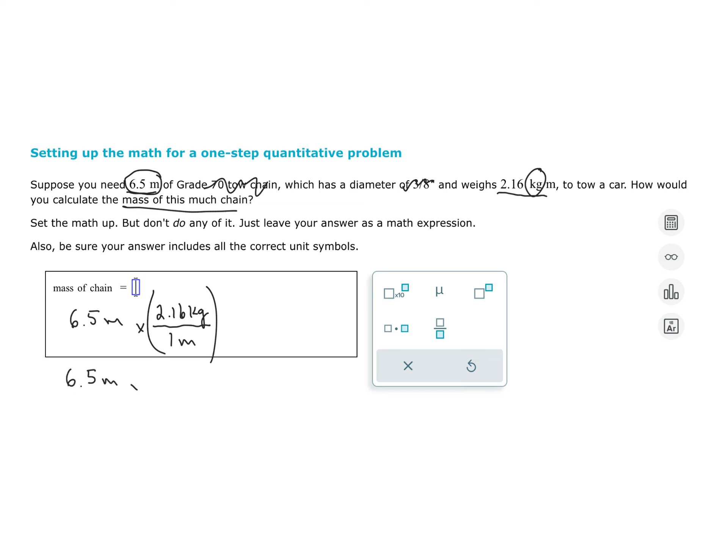Potentially, this might get marked wrong, in which case I would just say 2.16 kilograms per meter and not even include the 1 in front of the meter.